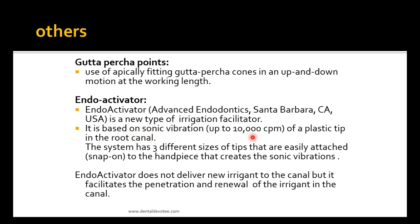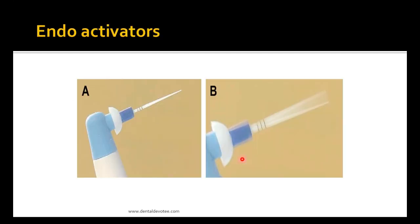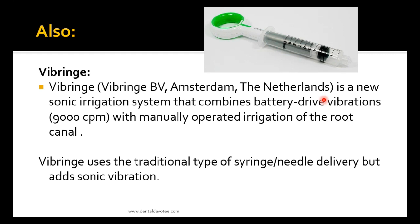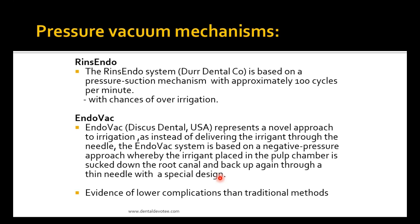The EndoActivator is a new type of irrigation facilitator based on sonic vibration up to 10,000 cycles per minute. It has different size tips that are easily attached to the handpiece and creates sonic vibrations. The EndoActivator does not deliver new irrigant to the canal but facilitates the penetration and renewal of the irrigant in the canal. Similarly, Vibringe is a new sonic irrigation system that combines battery-driven vibrations with manually operated irrigation at 9,000 cycles per minute, reusing the traditional syringe but adding sonic vibration.